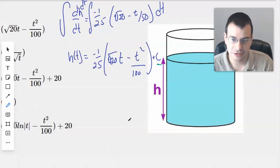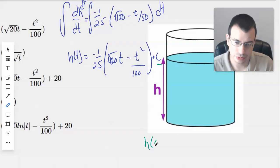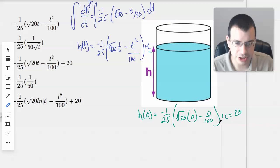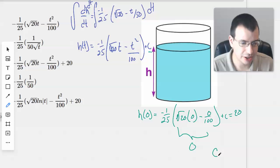So we have H(0) equals, we'll still have that negative 1 over 25, times square root of 20 times 0 minus 0 over 100 plus C equals 20. This entire middle, inner part equals 0. So this negative 1 over 25 doesn't really mean anything. So we have C equals 20.